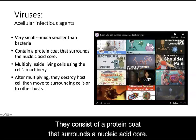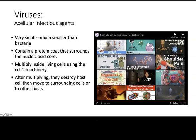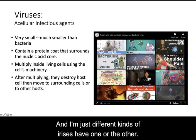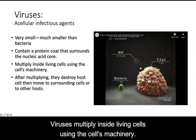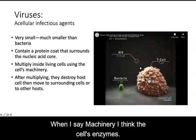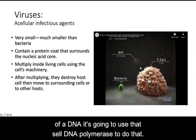Viruses consist of a protein coat that surrounds a nucleic acid core. Viruses can have either DNA or RNA in their core, and just different kinds of viruses have one or the other. The viruses multiply inside living cells using the cell's machinery — and when I say machinery, I think of the cell's enzymes. For example, if a virus needs to make a lot of copies of its DNA, it's going to use that cell's DNA polymerase to do that.